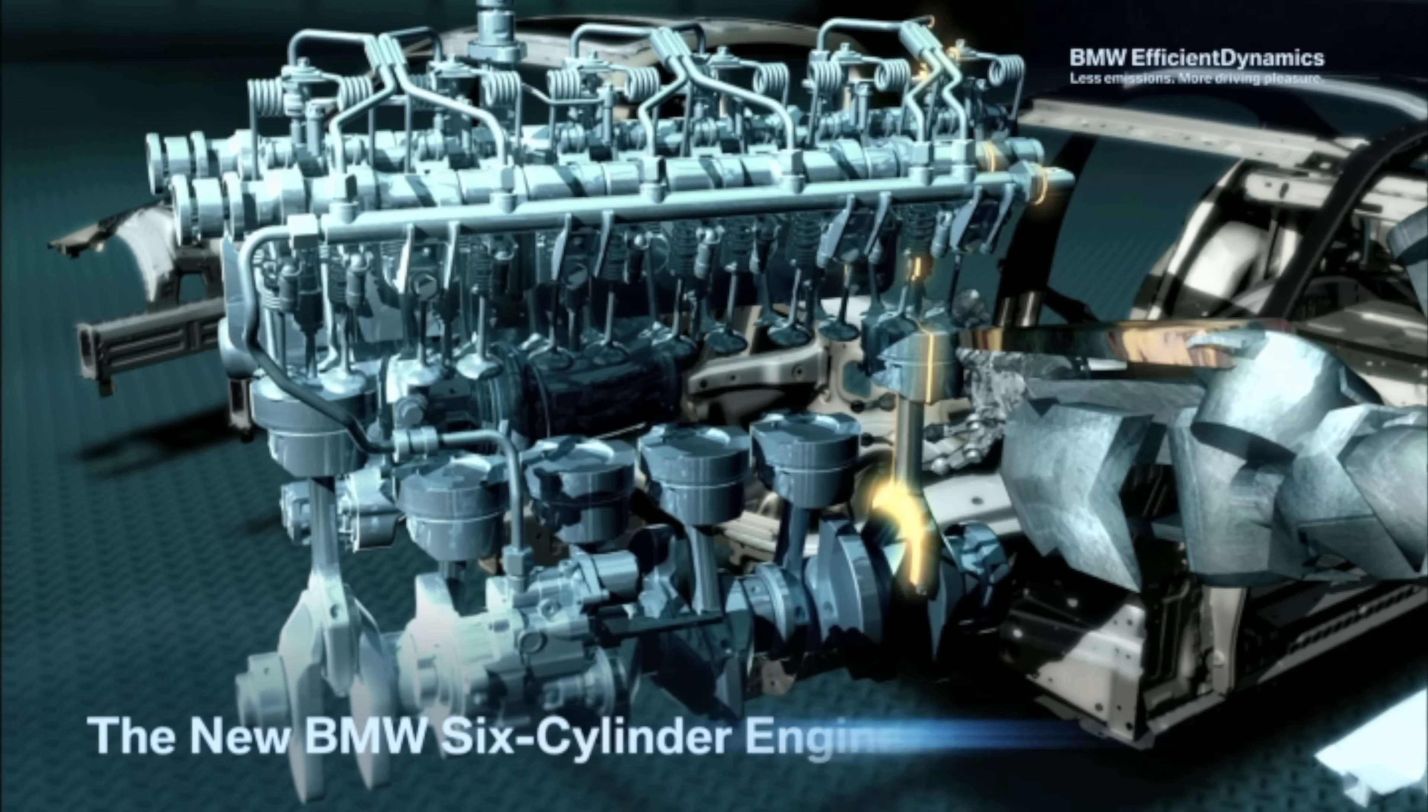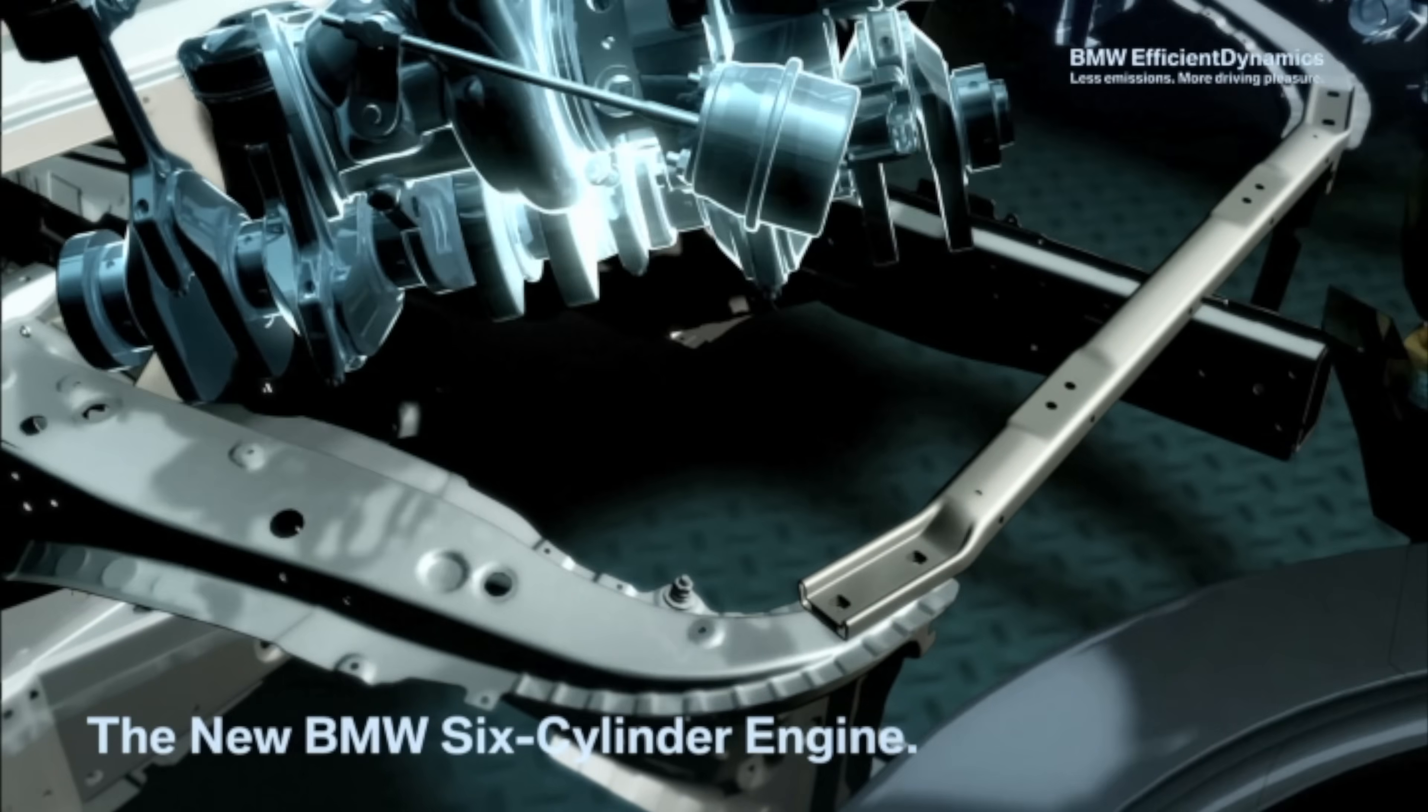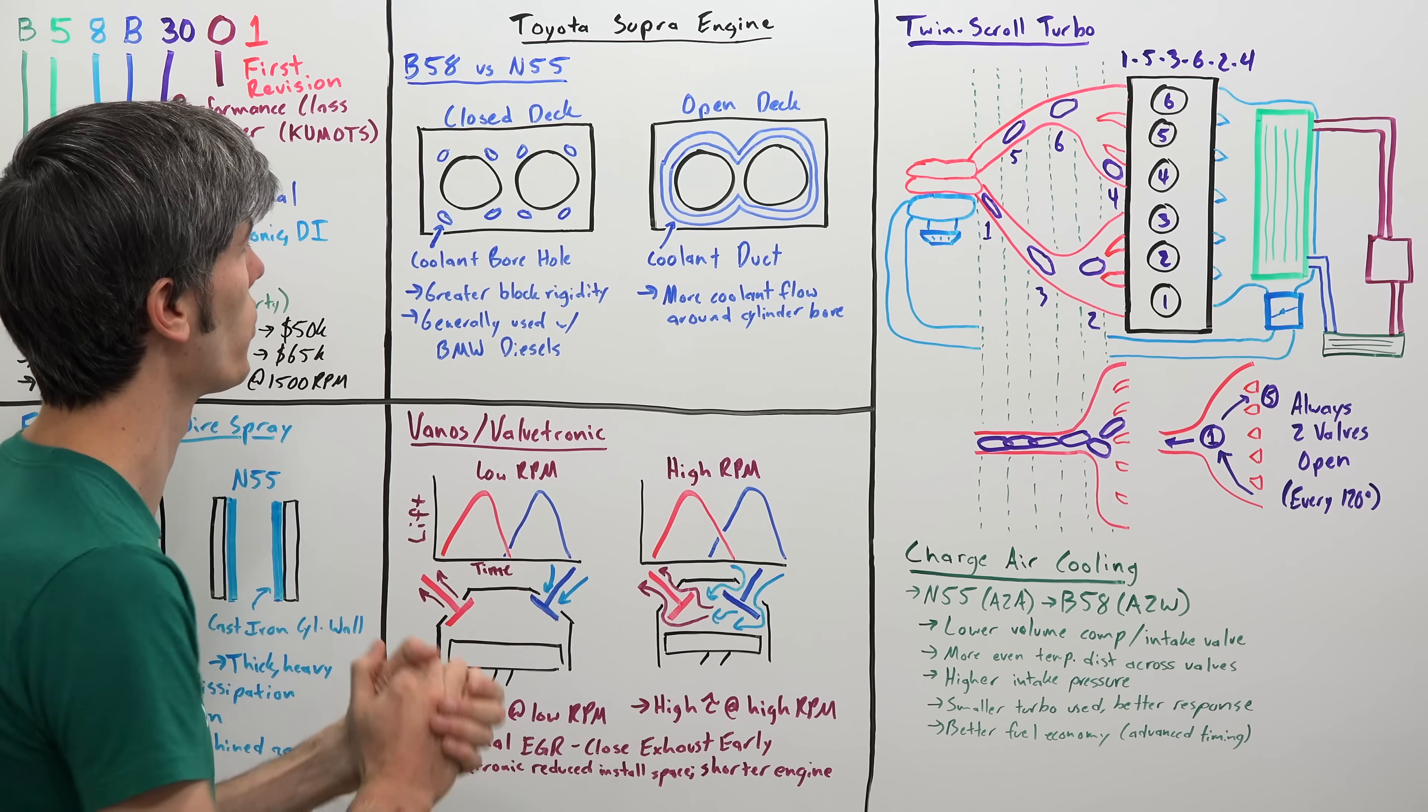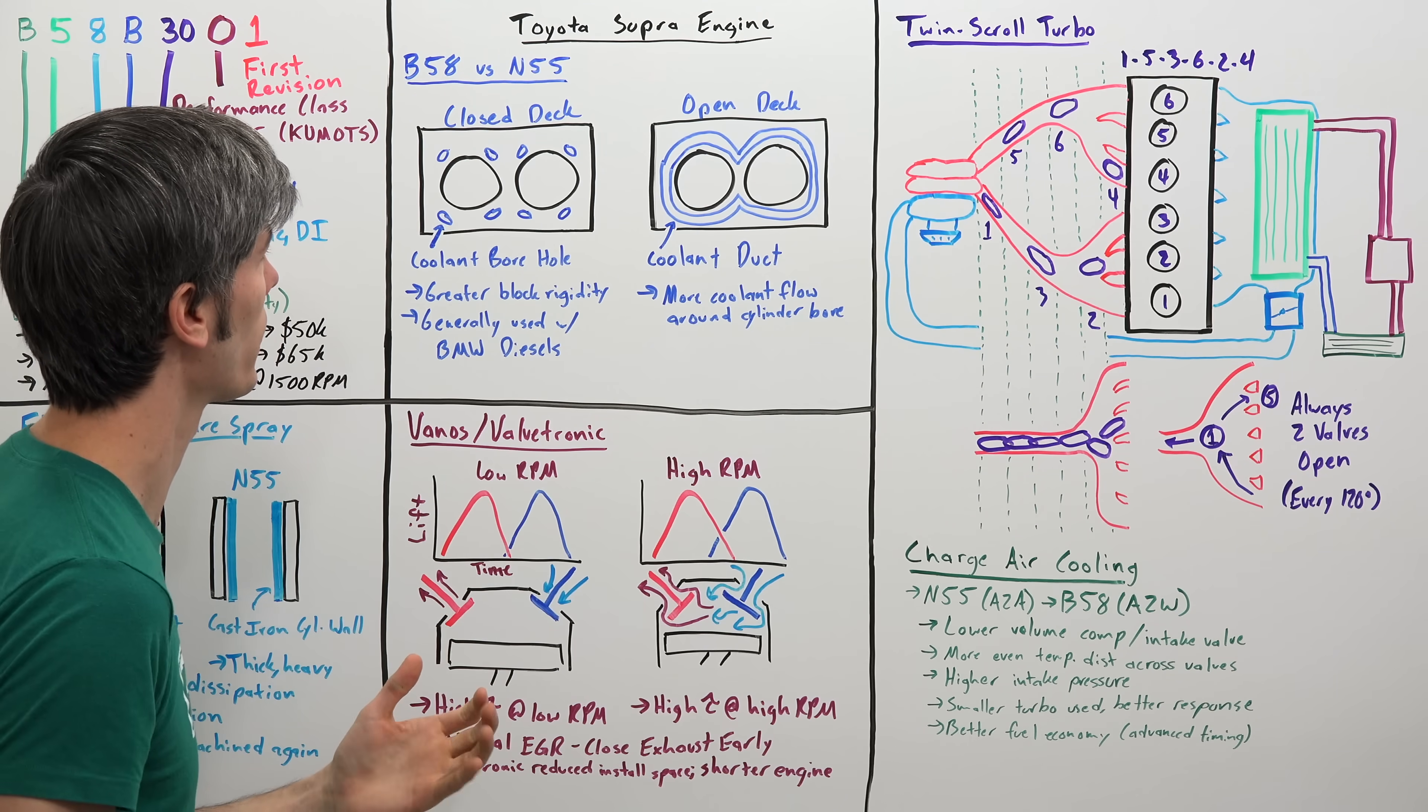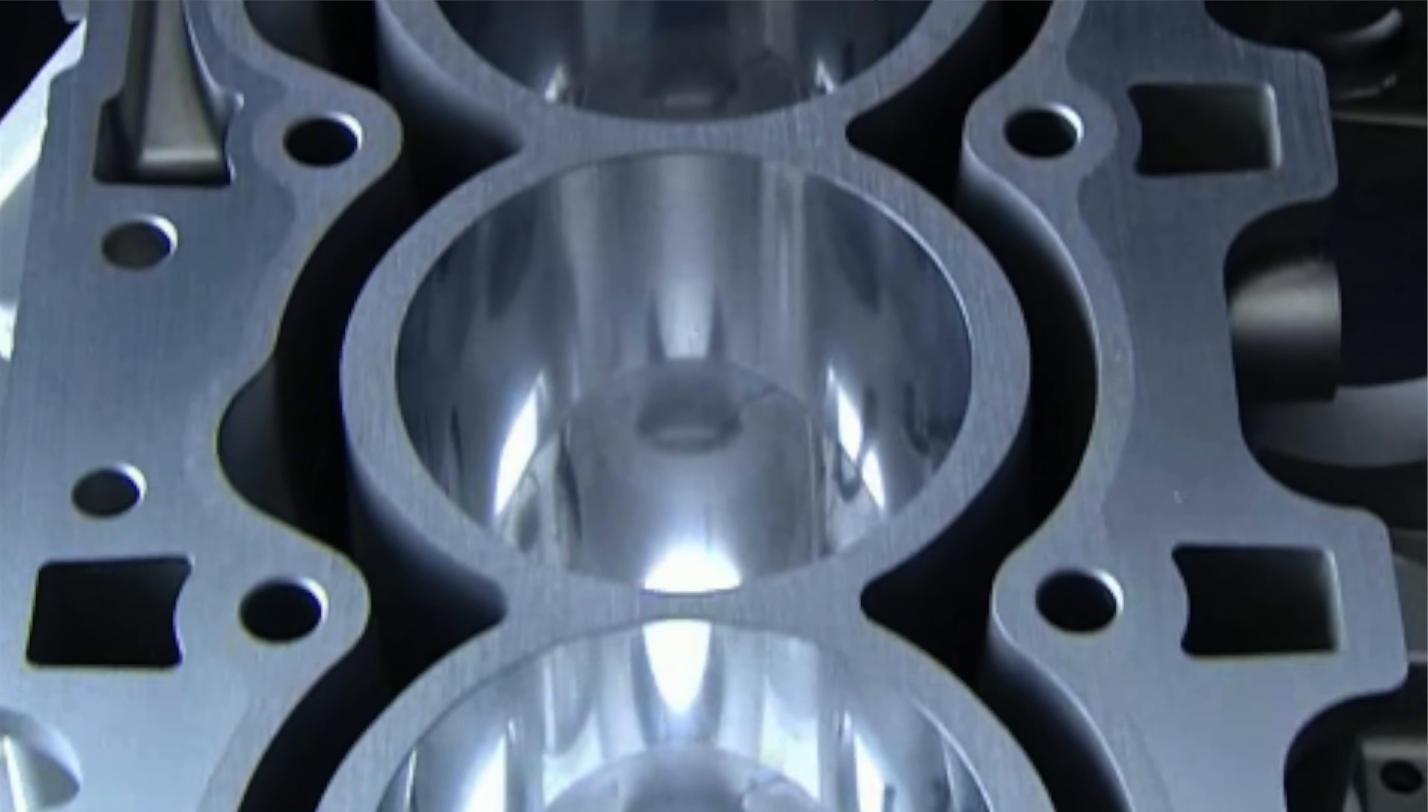Now the B58 engine is the successor to BMW's N55 engine, and so we're going to get into some of the changes here for this engine versus the N55. And one of the major changes to the block is they went from an open deck in the N55 to a closed deck on the B58, and so the main advantage of doing this is for rigidity.